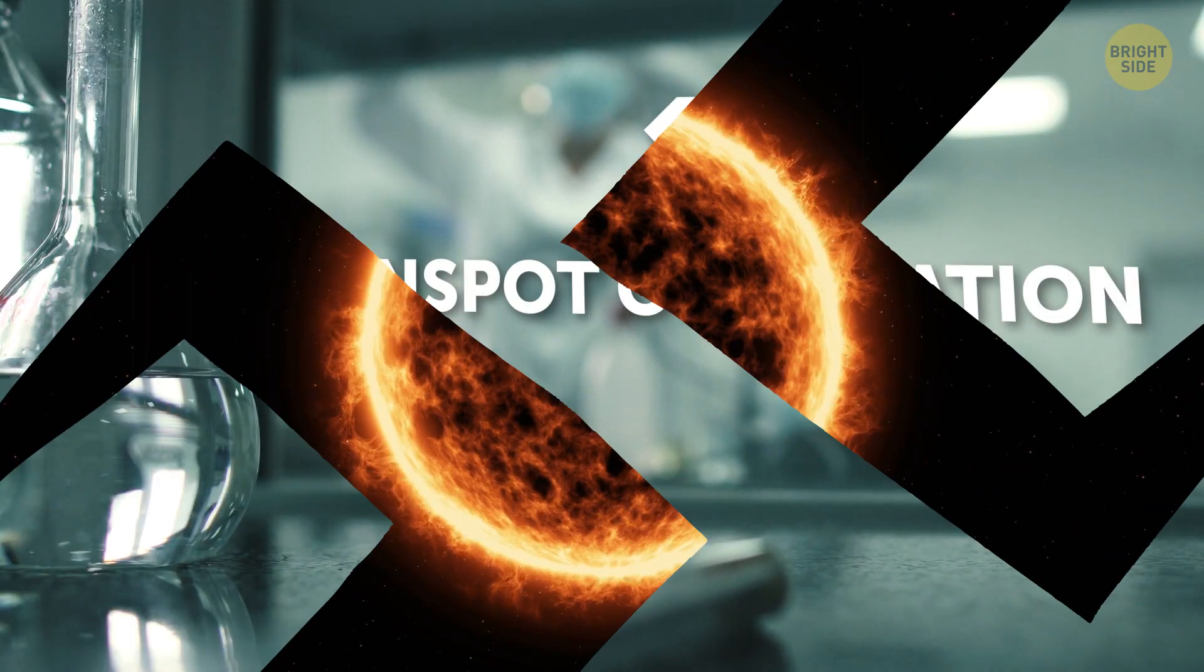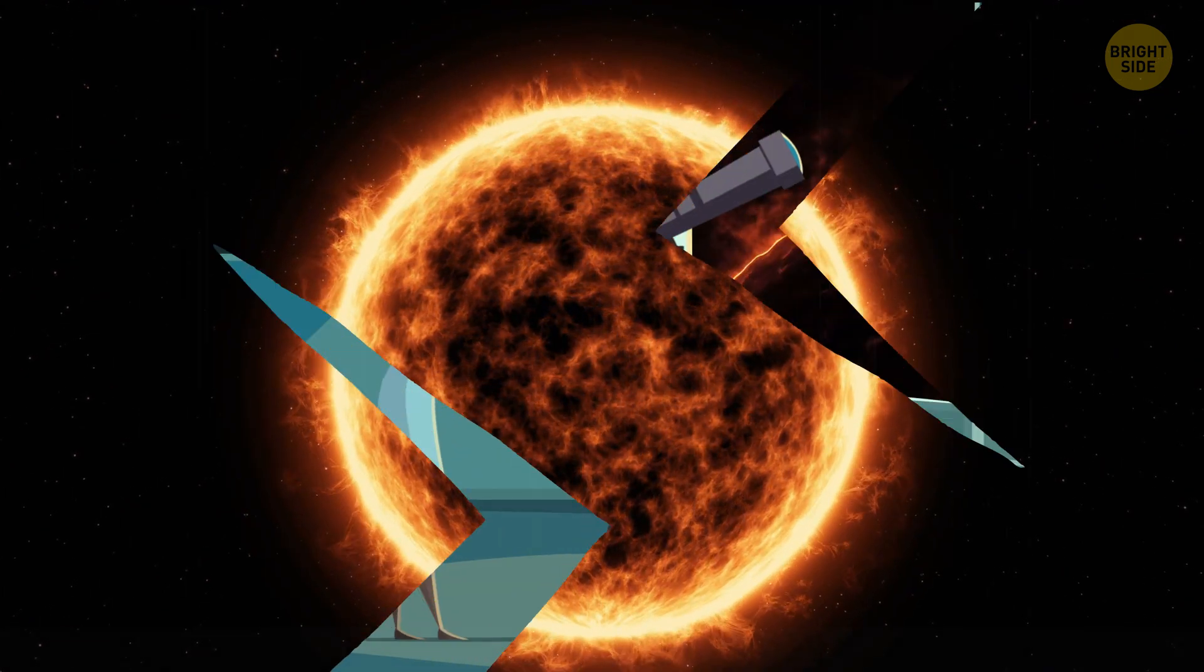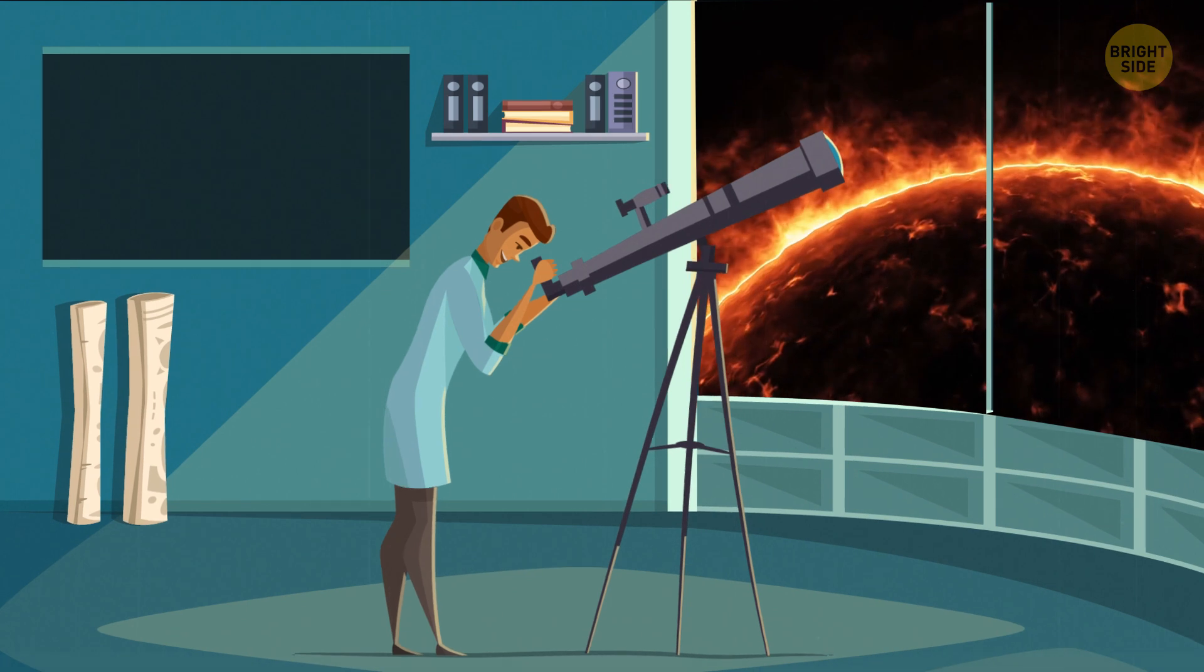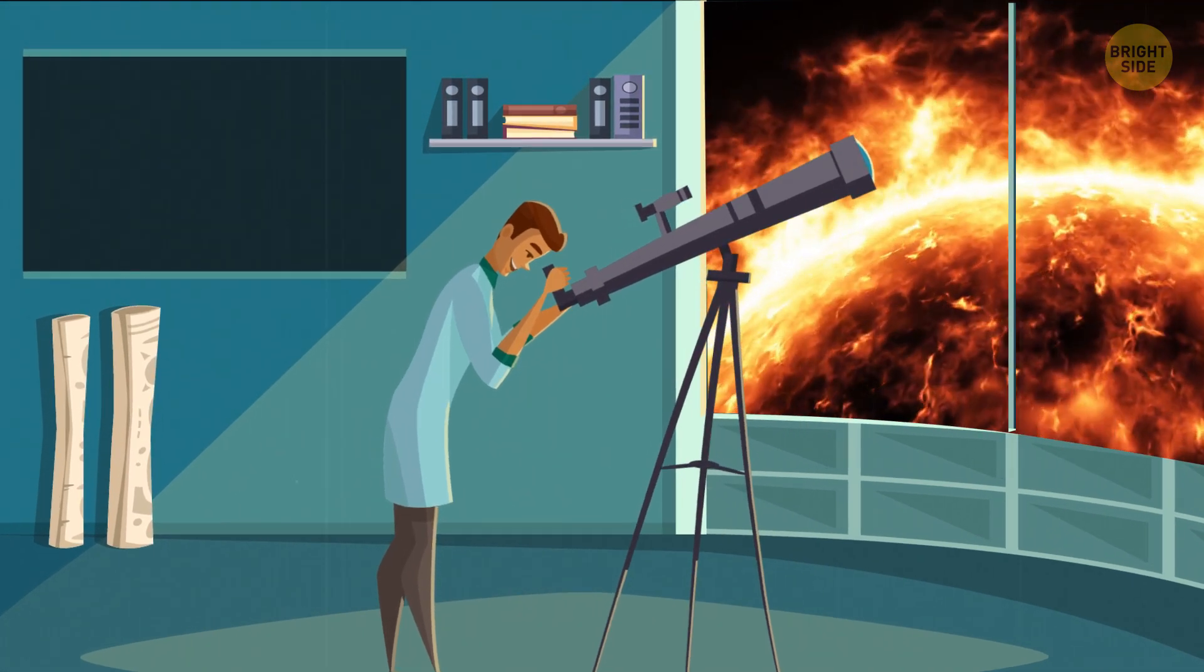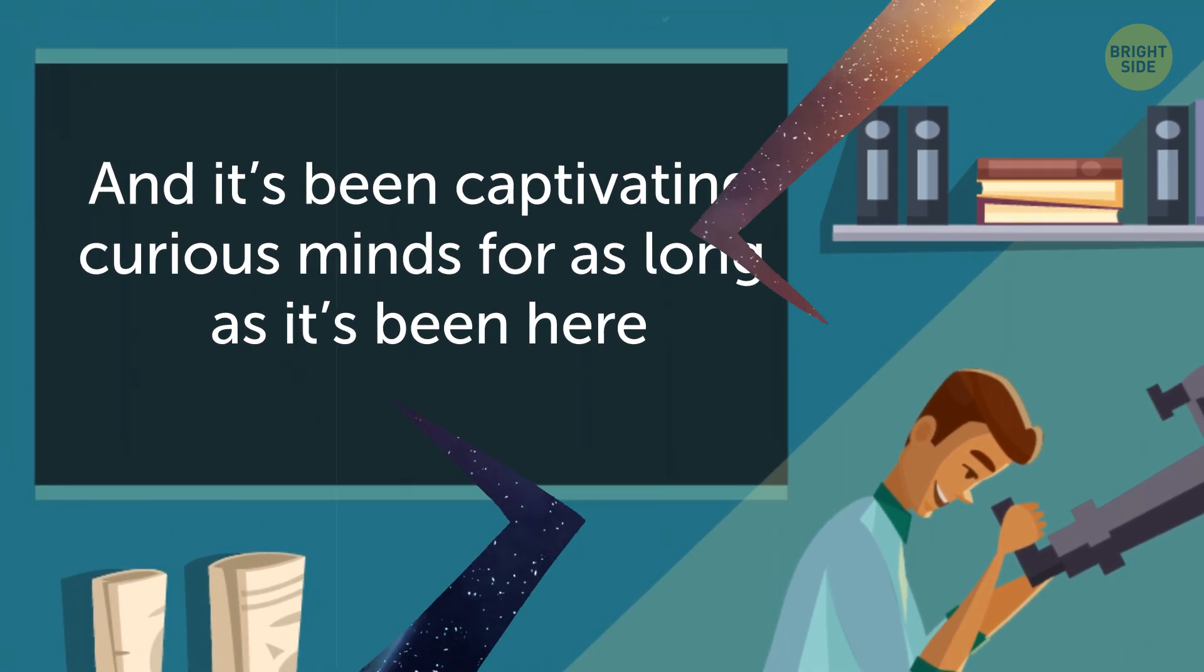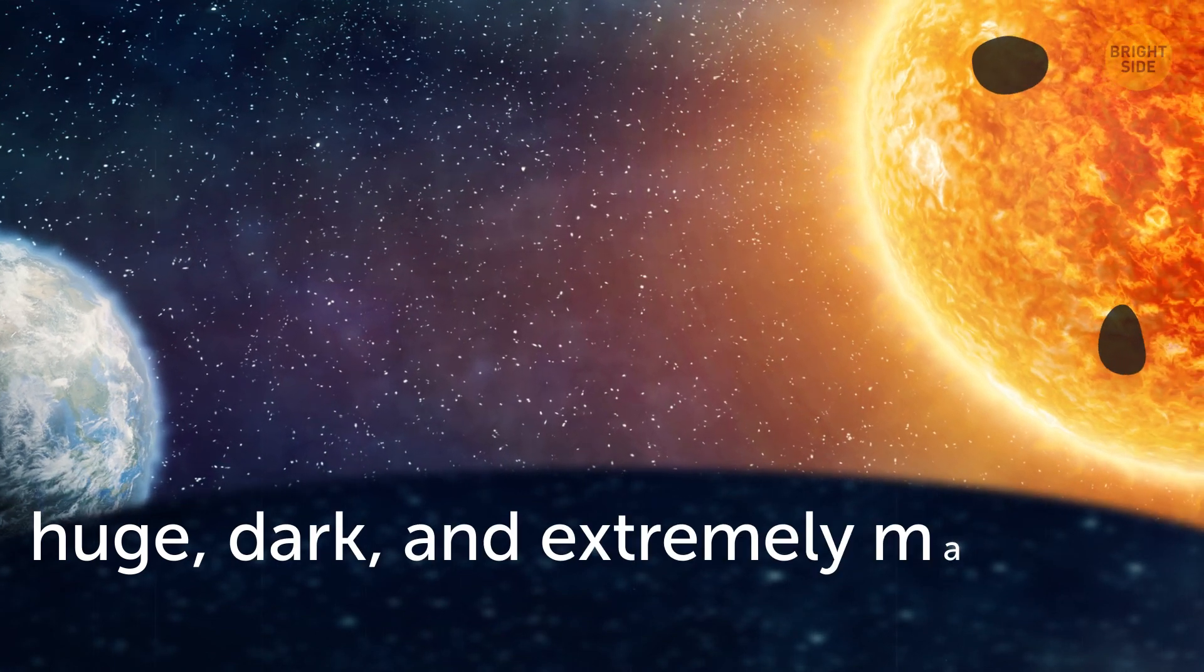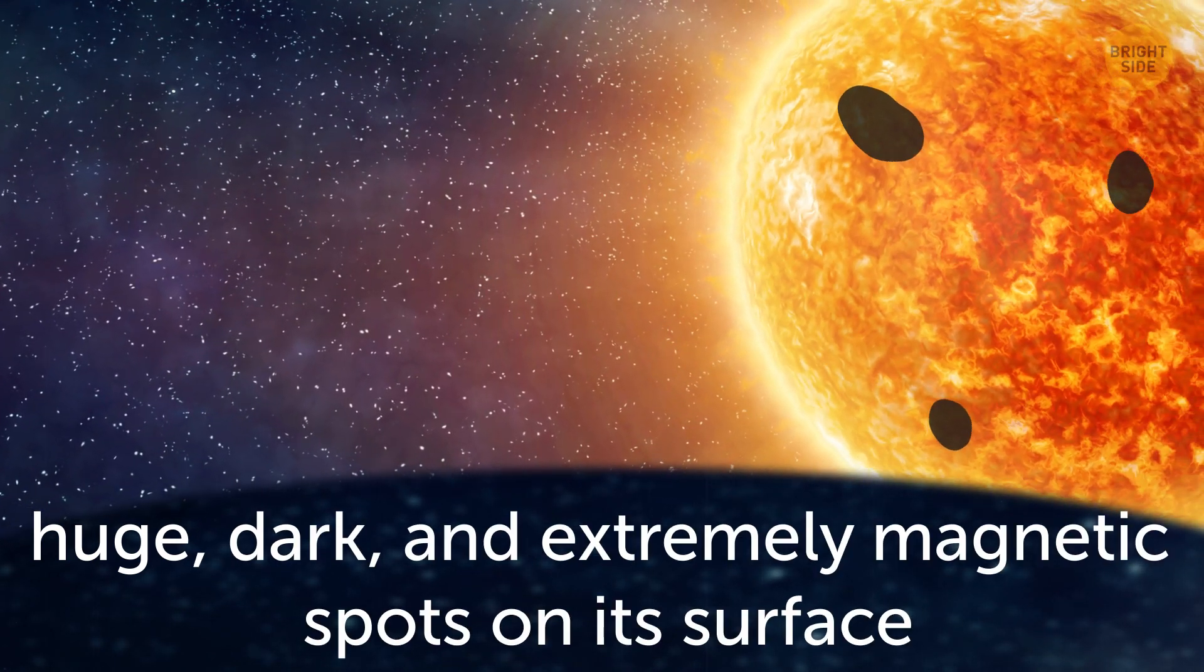Sunspot observation. Yeah, this is the kind of long-winded science that won't ever be replaced because we will be observing and studying our sun for as long as it's here with us. One of the most remarkable features of the sun is the appearance of huge, dark, and extremely magnetic spots on its surface.